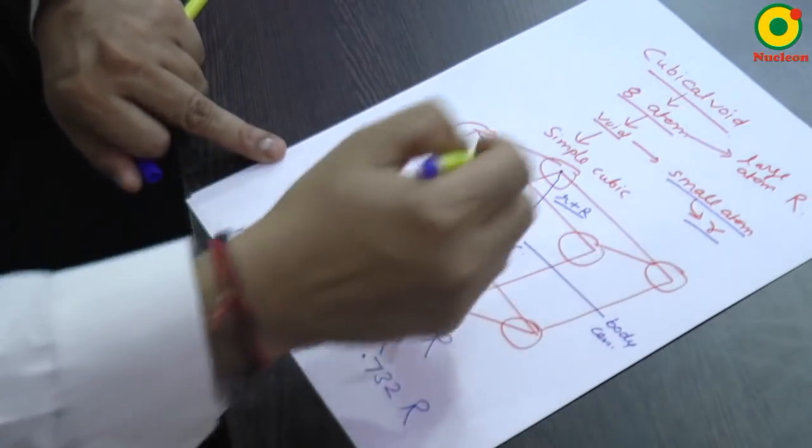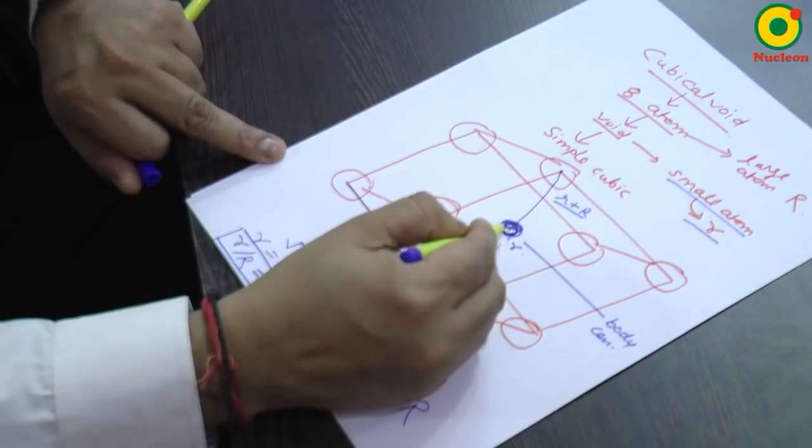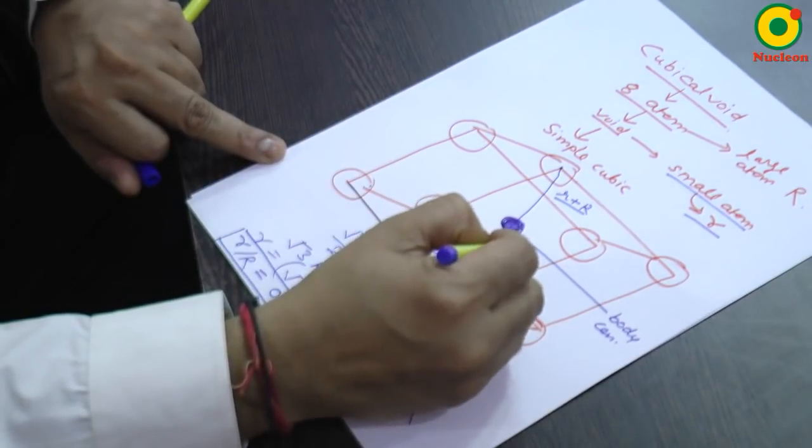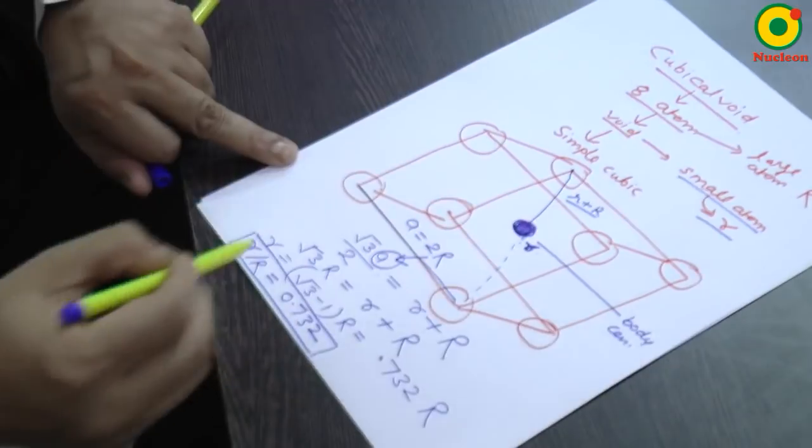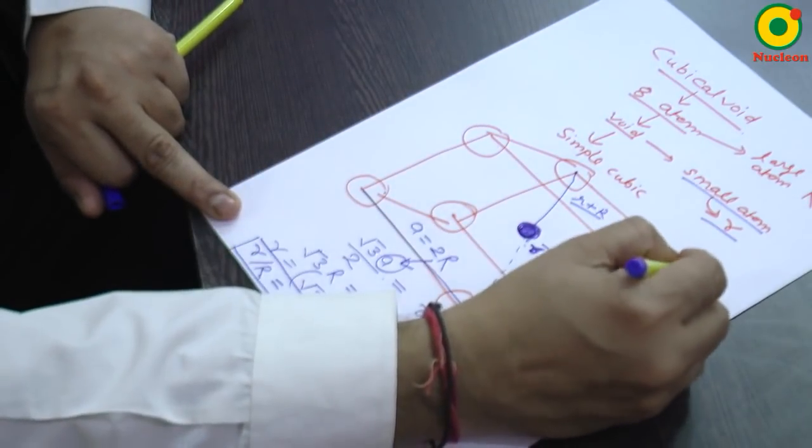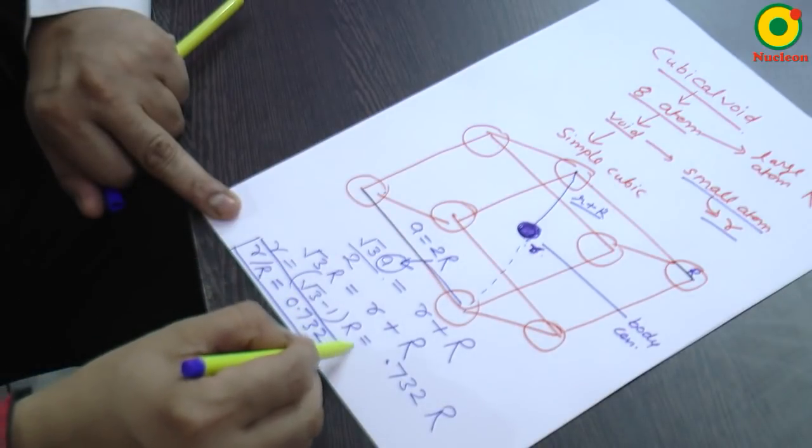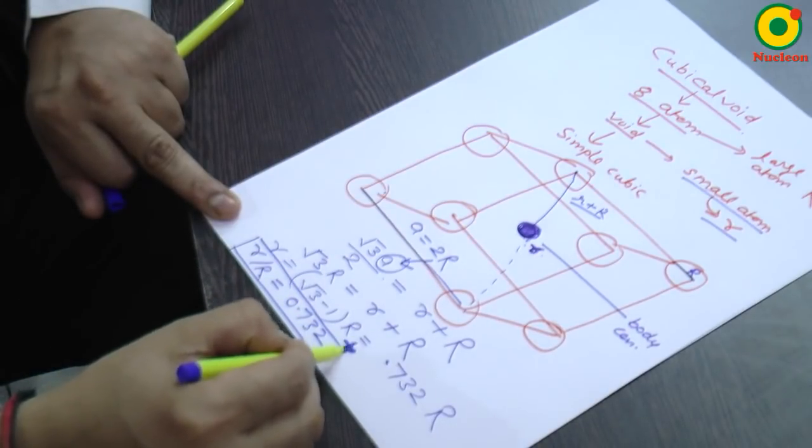So, the cubical void is present at the body center of simple cubic structure. And if the radius of void is small r, the relation between small r upon capital R, where capital R is the radius of large atom, this ratio is 0.732. You have to learn this radius ratio.